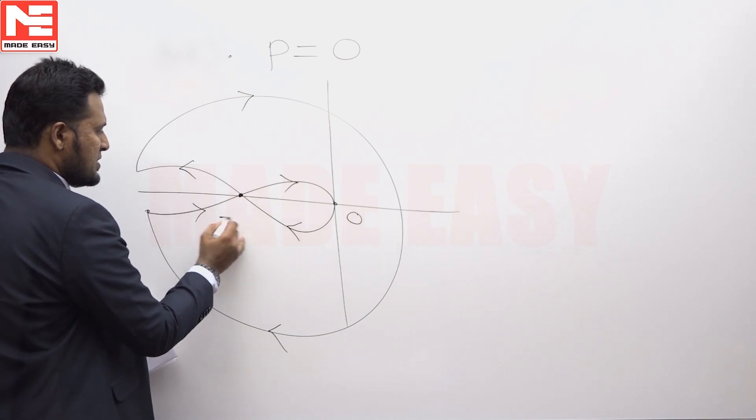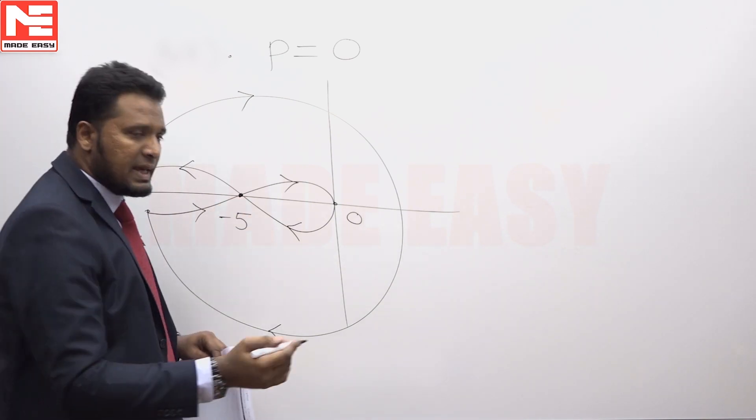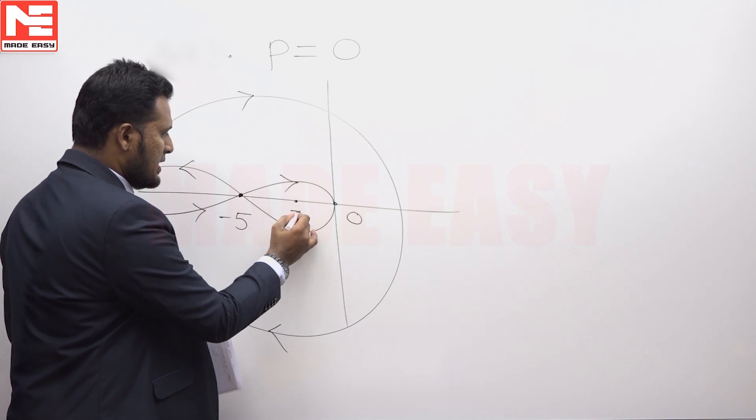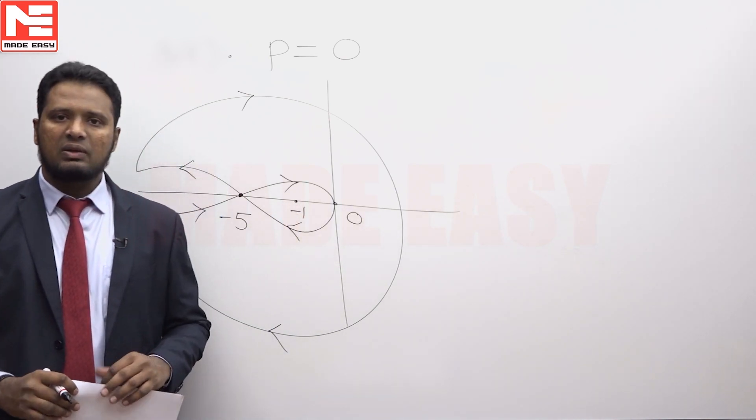It is mentioned that this intercept is of value minus 5. Hence minus 1 comma 0 lies somewhere at this location which is inside the Nyquist plot.